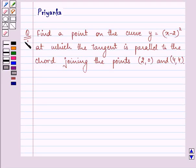Hello and how are you all today? The question says, find a point on the curve y equals x minus 2 the whole square at which the tangent